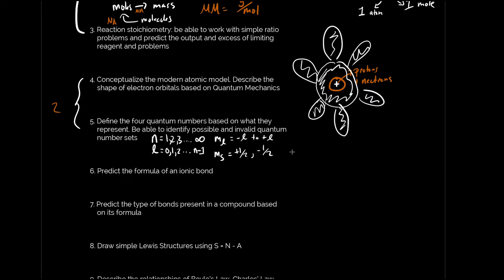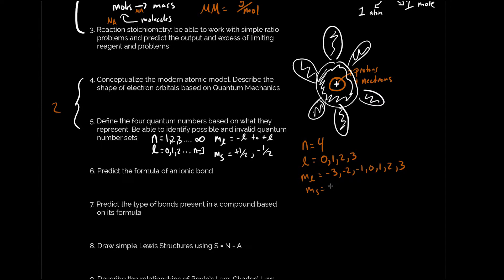As an example, if n = 4, then l can be 0, 1, 2, or 3. For l = 3, mₗ can be −3, −2, −1, 0, 1, 2, or 3. And m_s can be +½ or −½. The quiz is going to revolve around what is possible, so make sure you understand these rules.